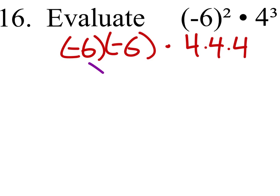From here, we just need to multiply from left to right. Negative 6 times negative 6. We have two negatives, so the answer is positive. 6 times 6 is 36.